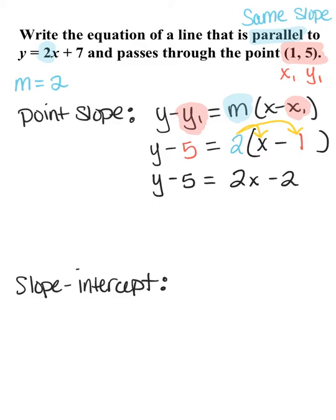And then I'm going to add 5 to both sides, so my final slope-intercept equation is going to be y equals 2x plus 3.